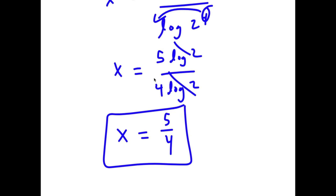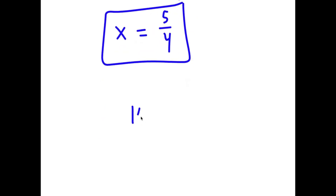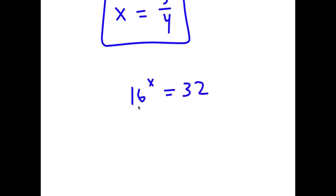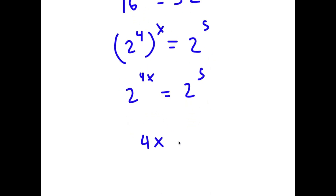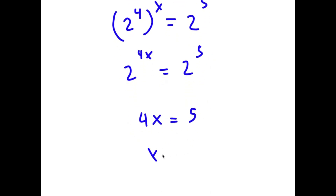For my second method, I have 16 to the power of x equals 32 again. This time I'm going to rewrite 16 as 2 to the power of 4. So I have 2 to the power of 4 to the power of x is equal to 32, and rewrite 32 as 2 to the power of 5. This is the same as 2 to the power of 4x equals 2 to the power of 5, meaning 4x equals 5 and x equals 5 over 4.